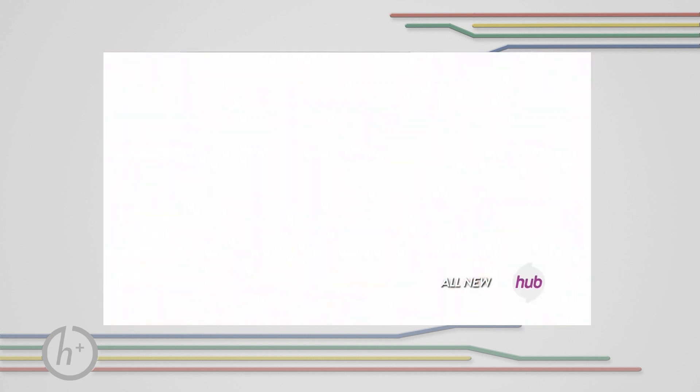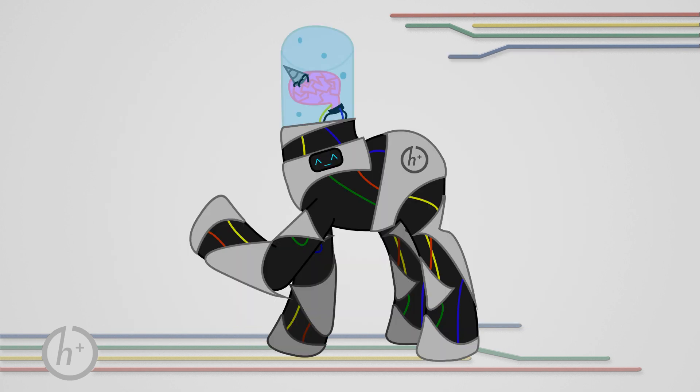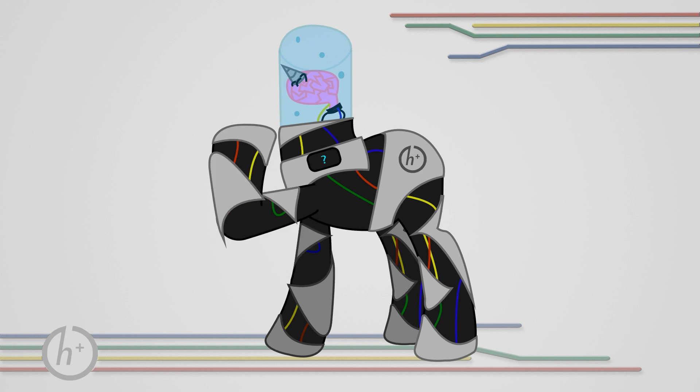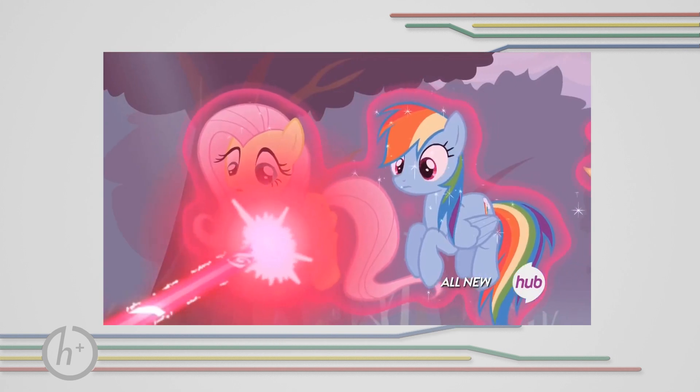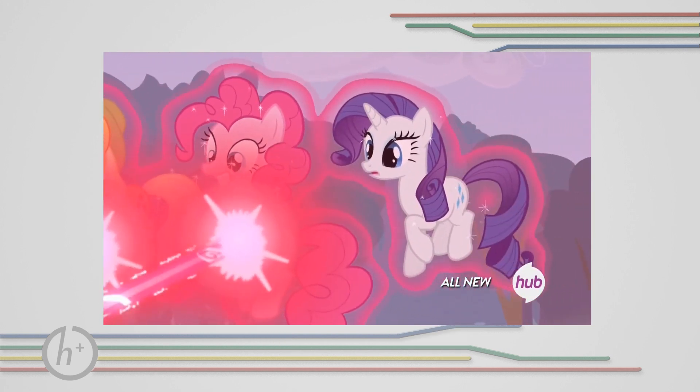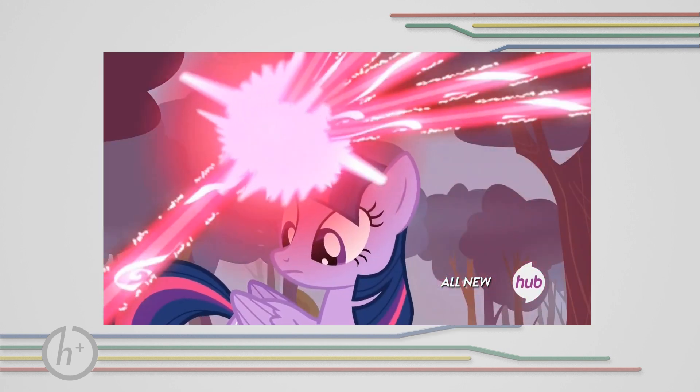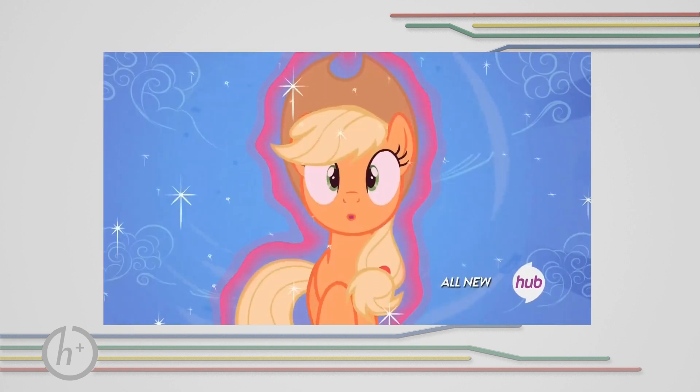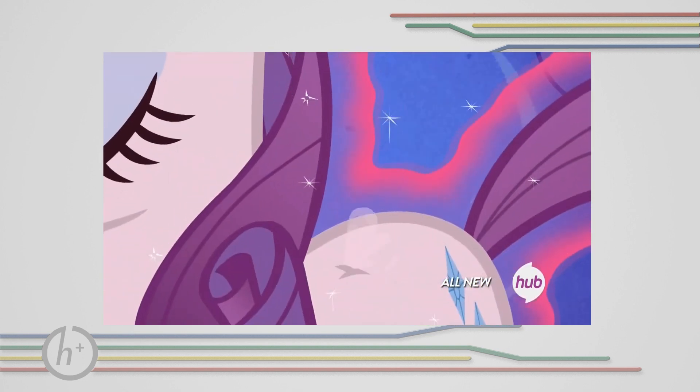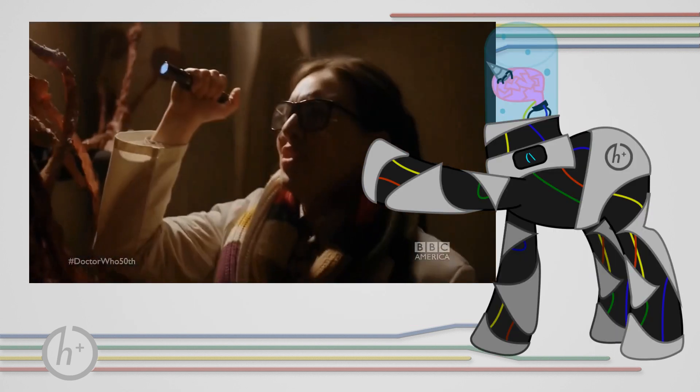She uses a spell she learned to turn the rest of the main six into Breezies. I've heard a lot of people call contrivance at this. I mean, why would Twilight just so happen to have a spell to turn ponies into Breezies? And I would agree with these complaints if it actually was just a spell to turn ponies into Breezies, but it isn't. I think we can safely assume from the fact that Twilight's spell also encompasses the group of Breezies, that it's really just a general transformation spell, and Twilight needed the Breezies to know what to turn the ponies into. Kinda like how the Zygons in Doctor